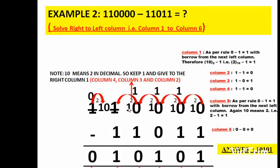Keep in mind that 10 in binary is 2 in decimal. So the fourth column will keep itself 1 and pass a borrow of 1 to the third column. The third column now has 10, which is 2 — it keeps 1 and passes 1 to the second column. The second column is also 10, that is 2 — it keeps 1 and passes 1 to the previous column.